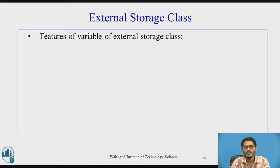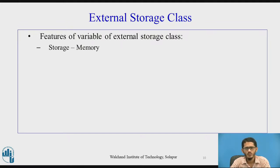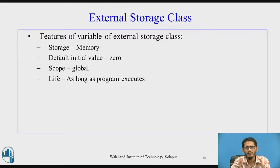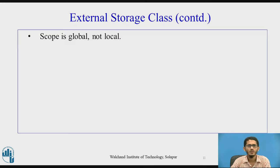Now let us take the final storage class — the fourth storage class, the external storage class. The storage assigned to a variable of the external storage class is memory. The default initial value is 0. The scope is global, meaning whenever a variable is declared to be of the external storage class, all the functions declared within a program can access its value. The scope is global, unlike the previous three classes where scope was local. The life is as long as the program executes.